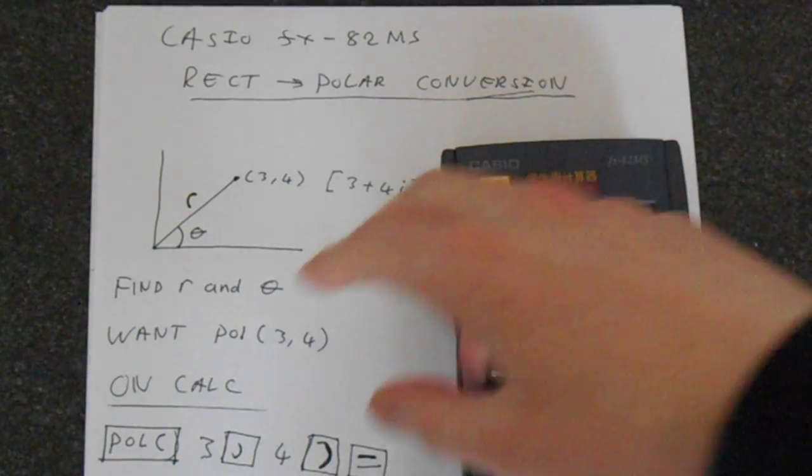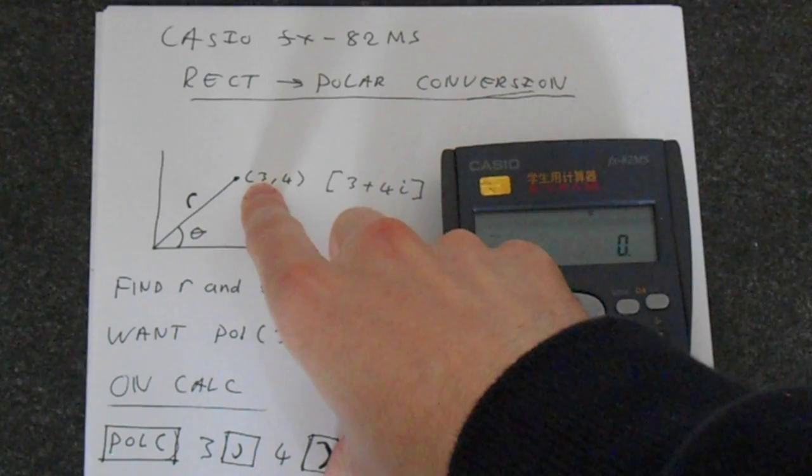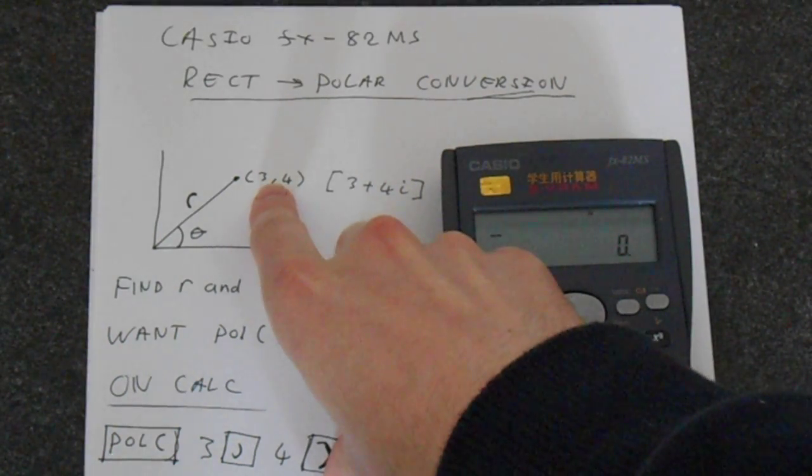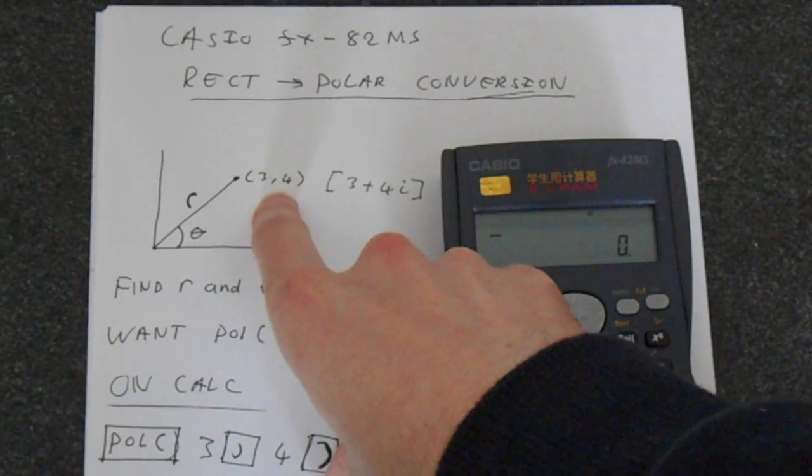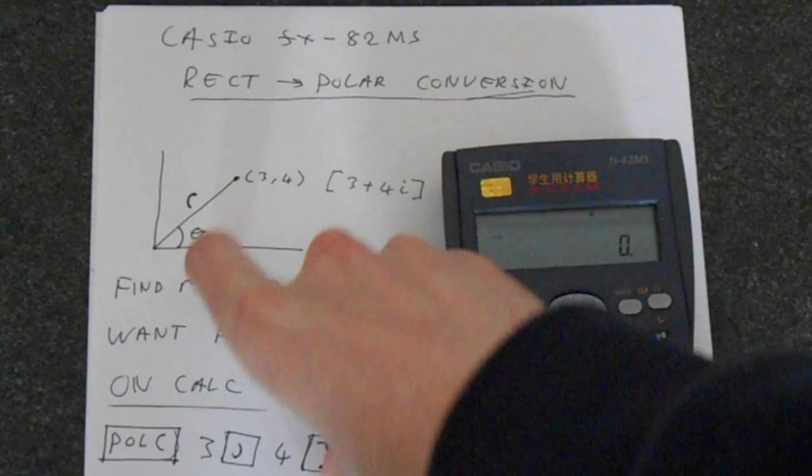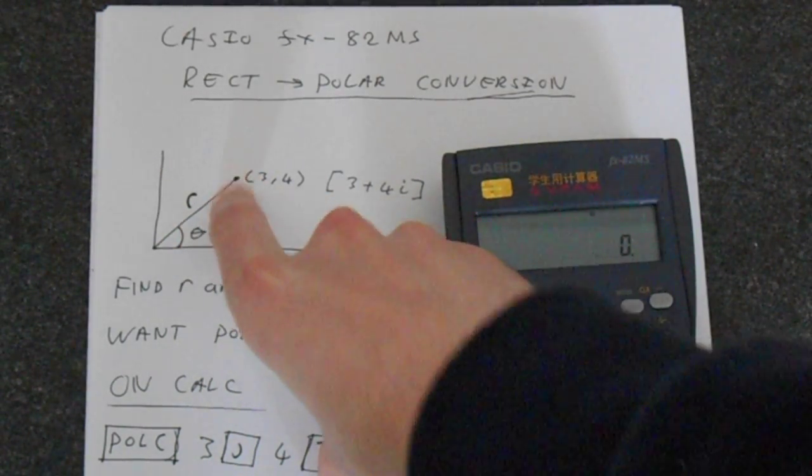So basically when we've got the point 3, 4, you're specifying this in Cartesian or rectangular form. This corresponds to the number 3 plus 4i, and this point here can either be represented by going along 3 and up 4, or by some line of length r at an angle theta.